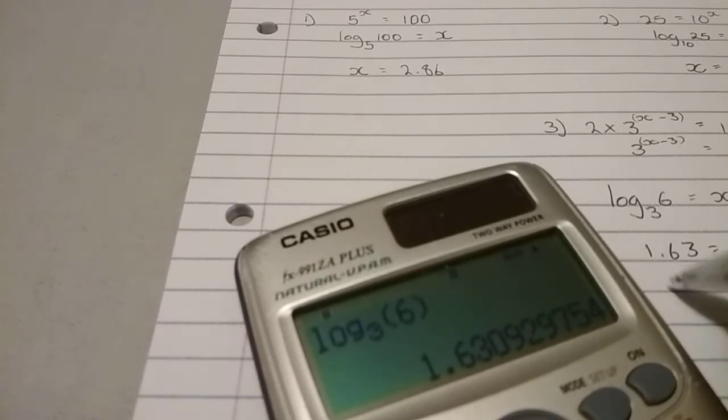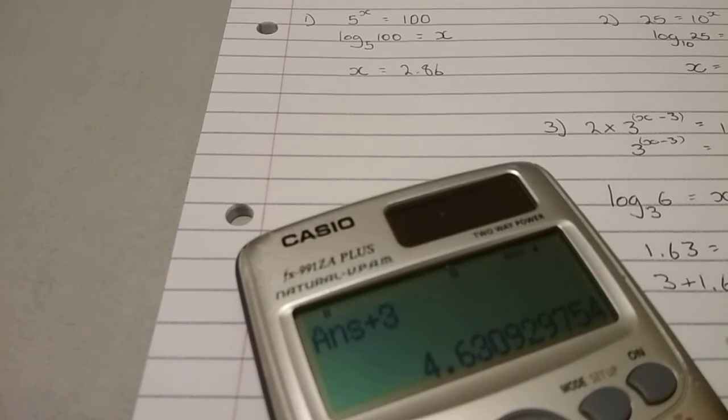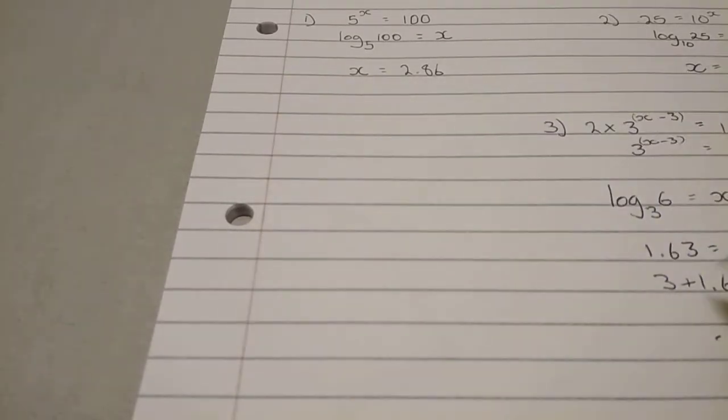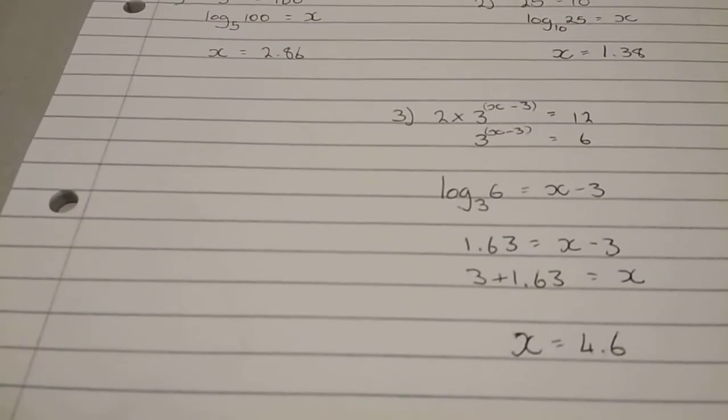You take the 3 that side. It becomes 3 plus 1.63 is equals to x. So on our calculator we can just add 3 and then we get that our final x is equals to 4.6. And just show it on the screen.